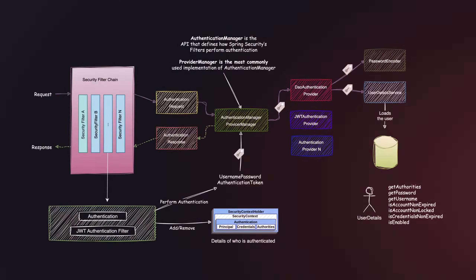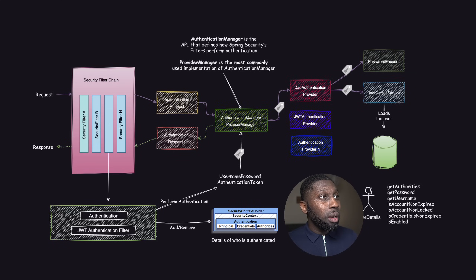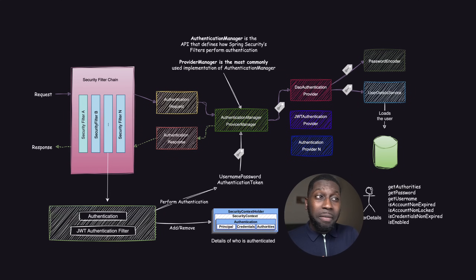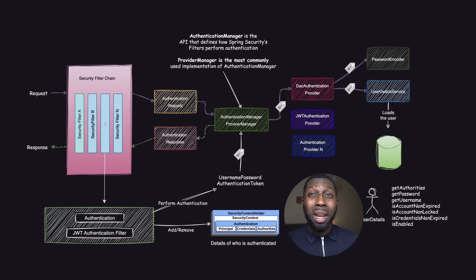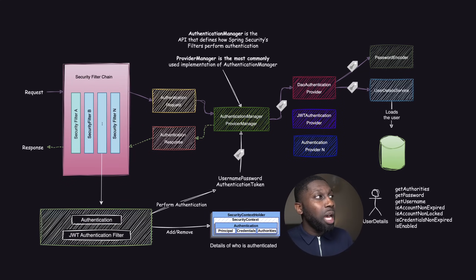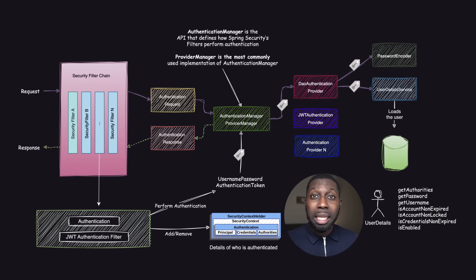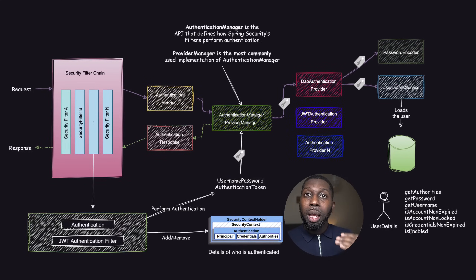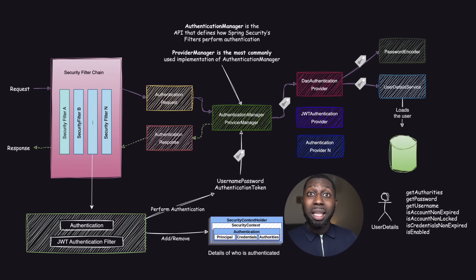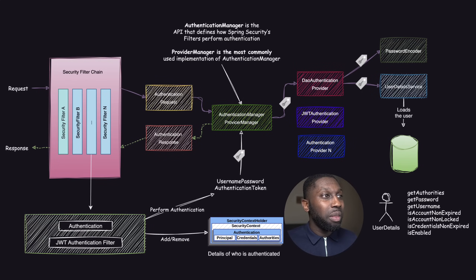Have you ever wondered about the Spring Security architecture and maybe you've just used security where you don't understand exactly the internals of it? In this video I'm going to teach you about the Spring Security 6 architecture. I'm going to go over it through this diagram because it's really important that you understand, when configuring security for your APIs, exactly how a request lands into the servlet container and the steps required to allow or reject requests.